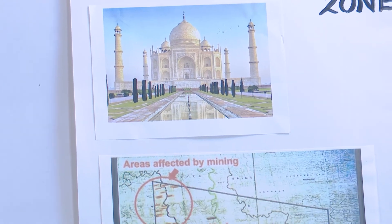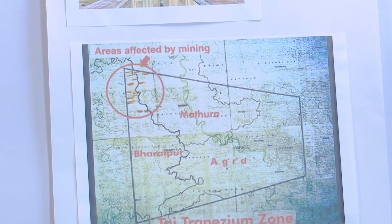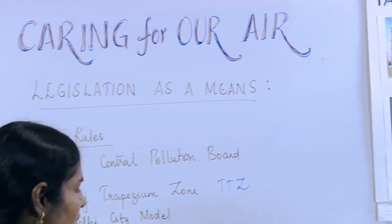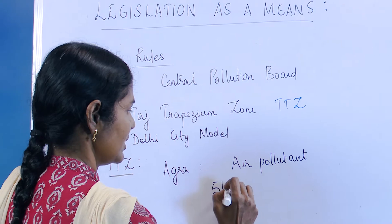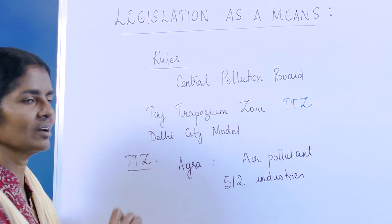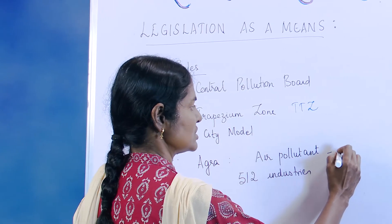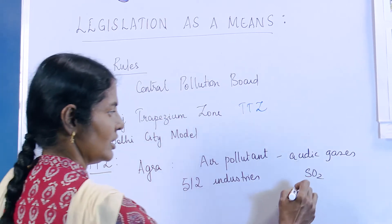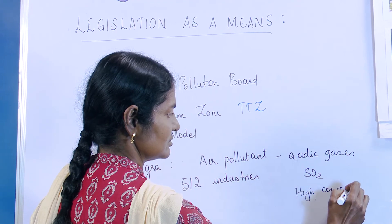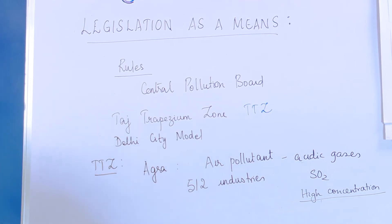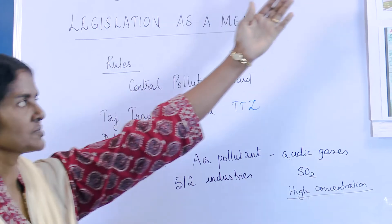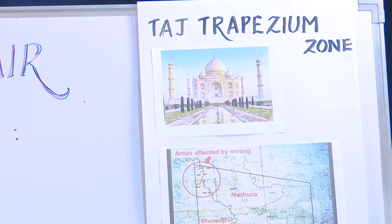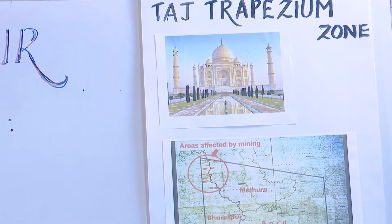In cities like Agra, industries started mushrooming very fast. Just around the Taj Mahal there were about 512 industries, and all these were letting out air pollutants — acidic gases, especially sulfur dioxide. When sulfur dioxide concentration was high, these acidic gases corroded the marble. The Taj Mahal is built on marble, which is nothing but calcium carbonate, and it was being eaten up by the acidic gases like sulfur dioxide.